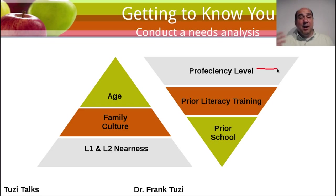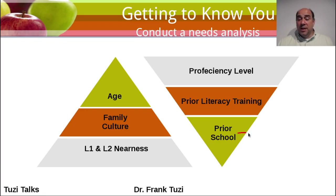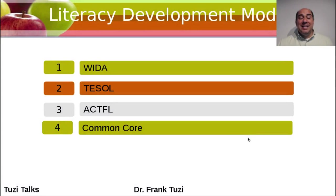Proficiency level — how well they communicate in the target language — also matters greatly. Students with higher proficiency will progress more easily to higher levels, while beginners need different treatment. In class, consider what type of literacy training they have — from parents, from school, or none at all — and what type of prior schooling they've experienced. Understanding those academic requirements helps you prepare and interact with students more effectively.